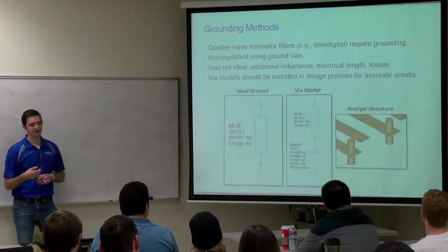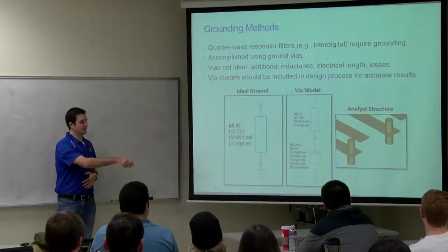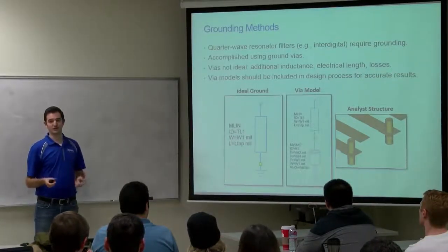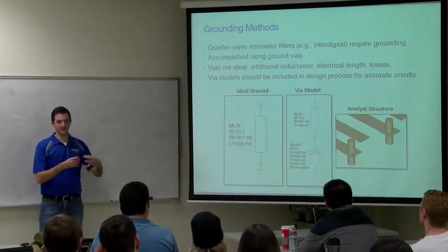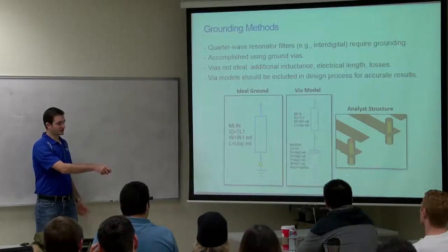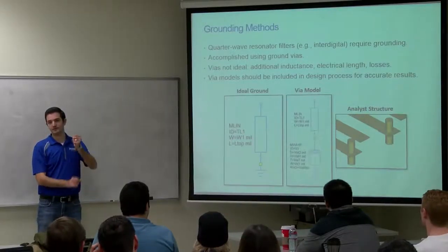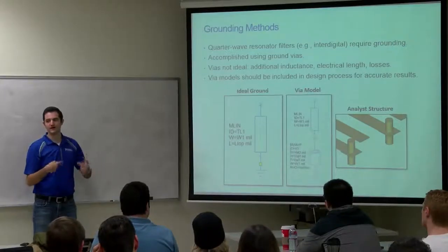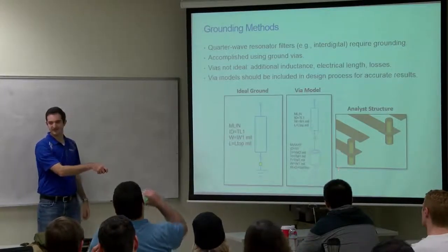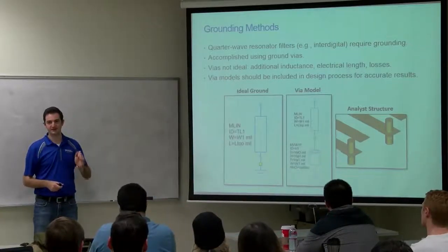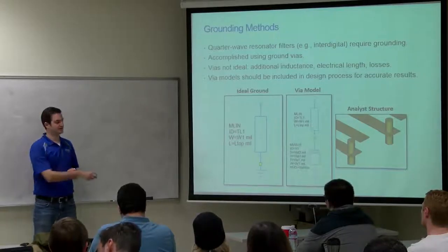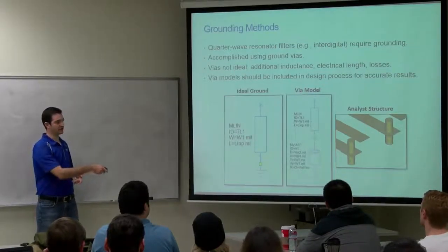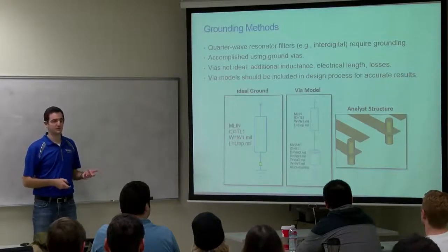I mentioned before that a disadvantage of some filters is that you have to ground them. These ground connections aren't simply short-circuiting to ground with a wire — there's some means to get to the ground reference plane, often a via, which is a tube of copper making a connection to those reference planes. Unfortunately, vias have their own parasitics — an inductance and resistance associated with them — so it won't be an ideal ground connection. At certain frequencies and for certain filters, the parasitics can actually detune your structure, so you need to take care in how you model these ground connections.